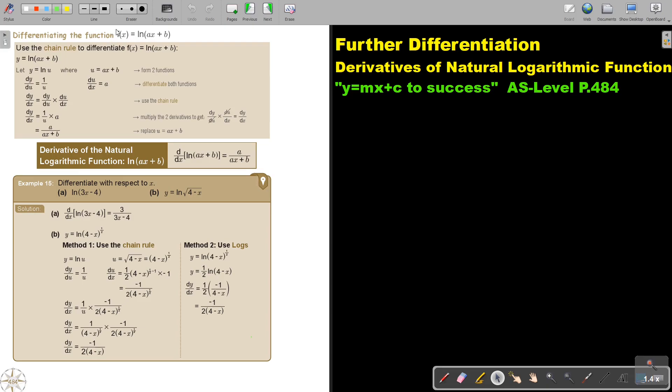Differentiate the function f(x) equals ln(ax + b). So it's now not just ln(x), it's this more in the bracket. If we use the chain rule to differentiate this, we make the inside, this, we make u, and then we say y equals ln(u).